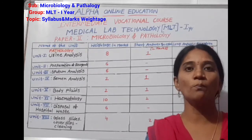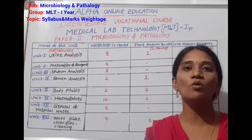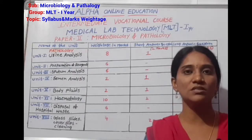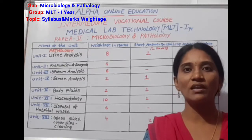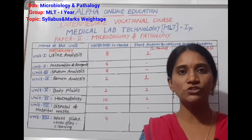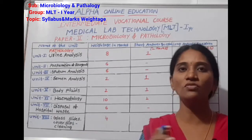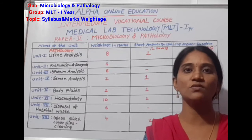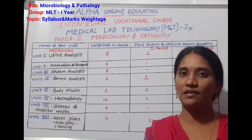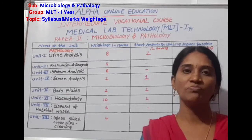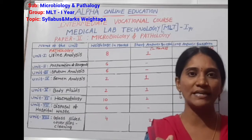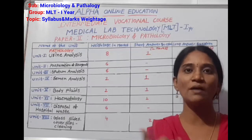In hematology we study blood cells: red blood cells, white blood cells, and platelets — their count — as well as hemoglobin estimation, that is the hemoglobin percentage in the blood.